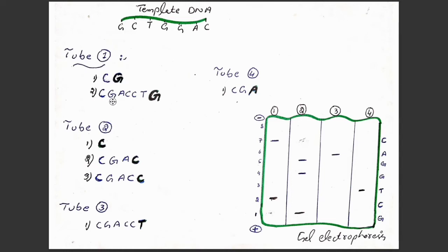There is also a second possible sequence from tube 1. Normal nucleotides attach — cytosine to G, guanine to C, adenine to T, cytosine to G, cytosine to G, thymine to A — but to the final C there will be attachment of the dideoxy guanine triphosphate. Since dideoxy guanine triphosphate will stop the chain, further no elongation will occur, and we will get another longer sequence.